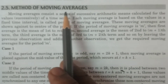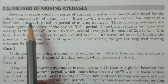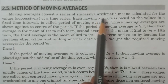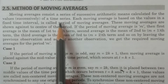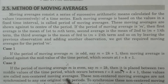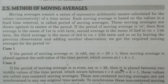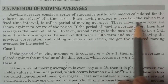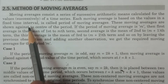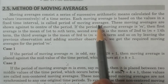What is this method? It is very simple. Moving averages is a series of successive arithmetic means calculated for the values of a time series. For example, if you have 10 years values and you want to calculate moving averages for a period of five or six years, then five-year averages are to be calculated. Moving averages are based on the values of a fixed time interval, which is called the period of moving averages.